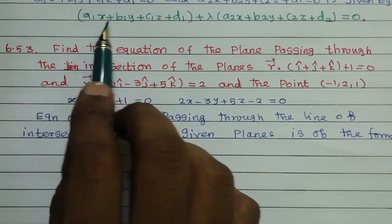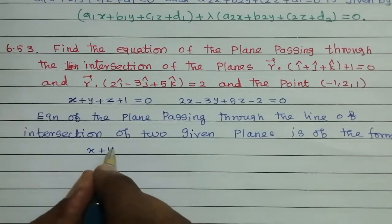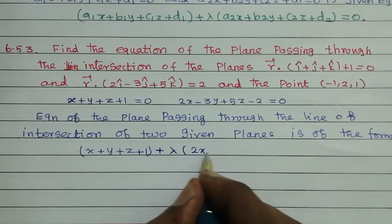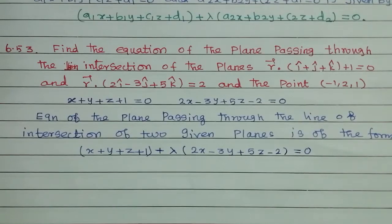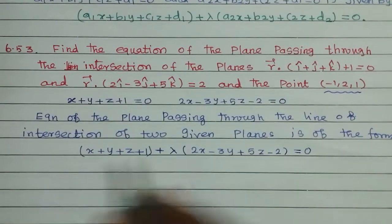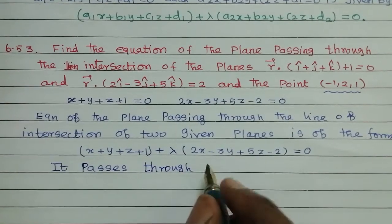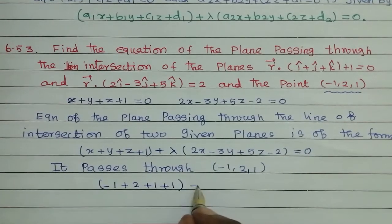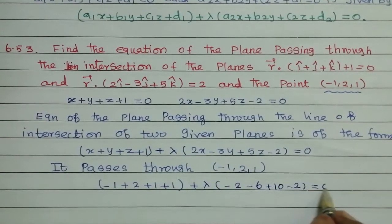Cartesian form: a1x plus b1y plus c1z plus d1 plus lambda into the second equation equal to 0. So: (x plus y plus z plus 1) plus lambda into (2x minus 3y plus 5z minus 2) equal to 0. It passes through the point (minus 1, 2, 1). Substituting: (minus 1 plus 2 plus 1) plus lambda into (minus 2 minus 6 plus 5 minus 2) equal to 0.